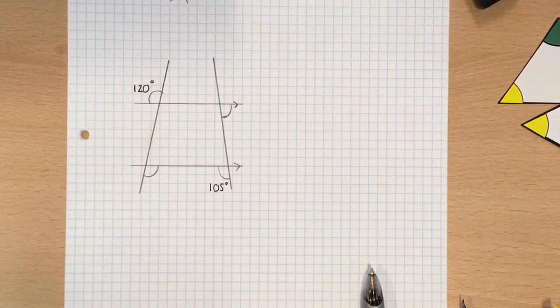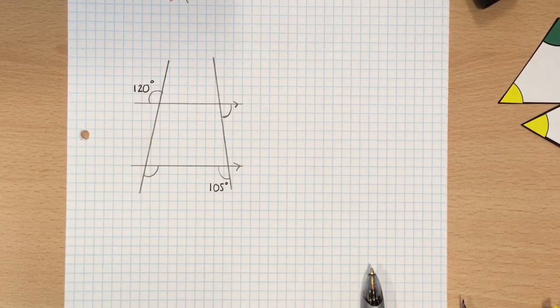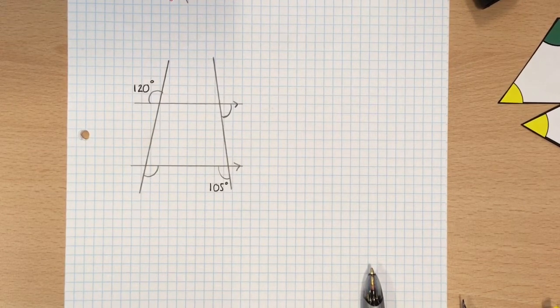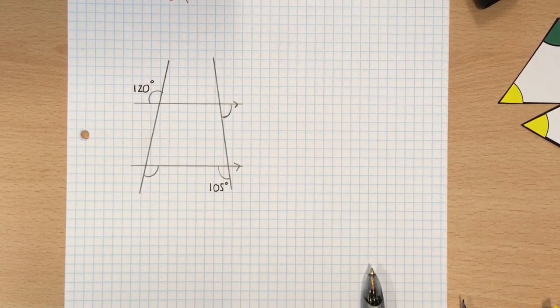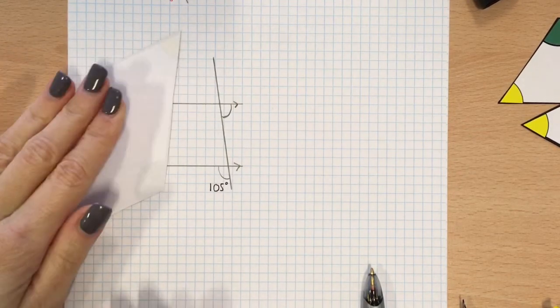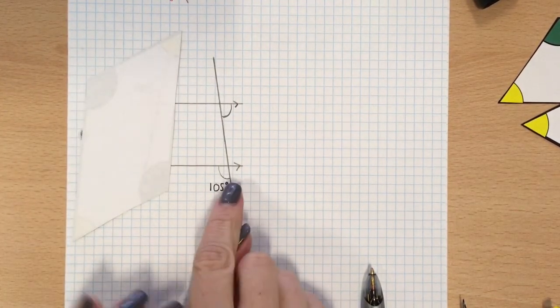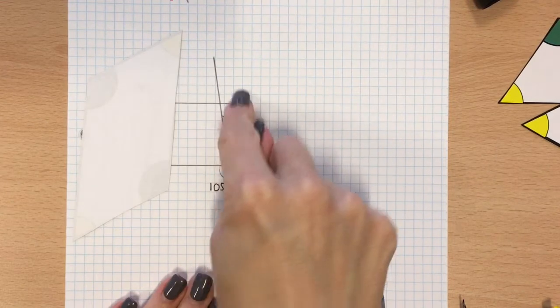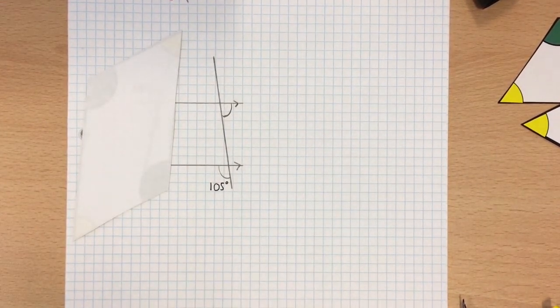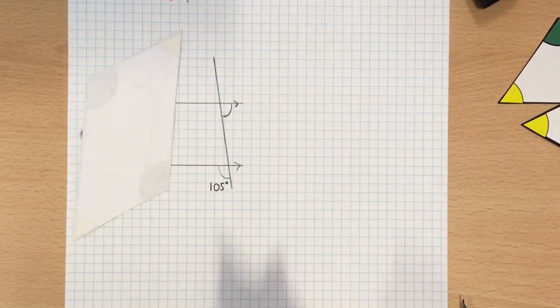So what I've got to try and do is I've got to try and ignore one part, work out the other, and then work out the other part. So if I cover up this side here, what I've got is I've got two parallel lines and a line going through it. And I can do the same thing as I did on the first example.